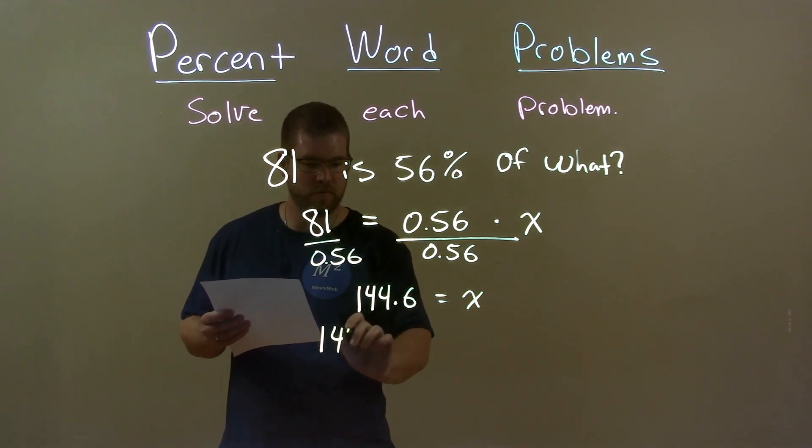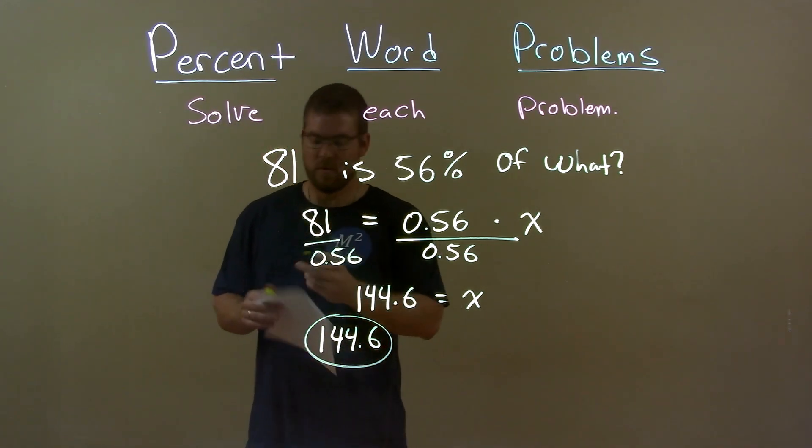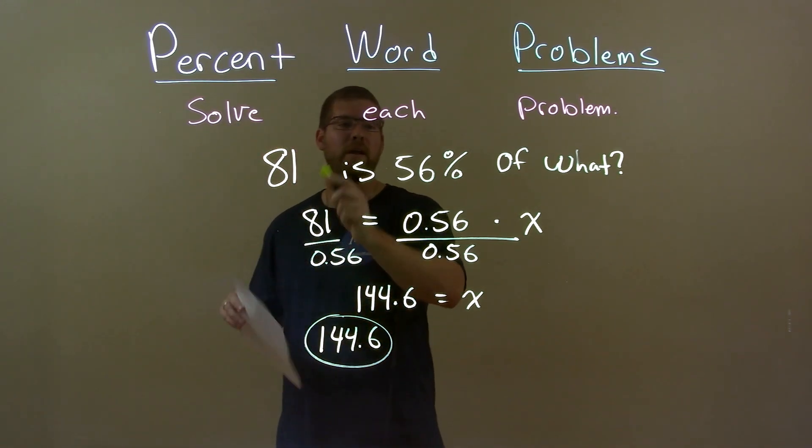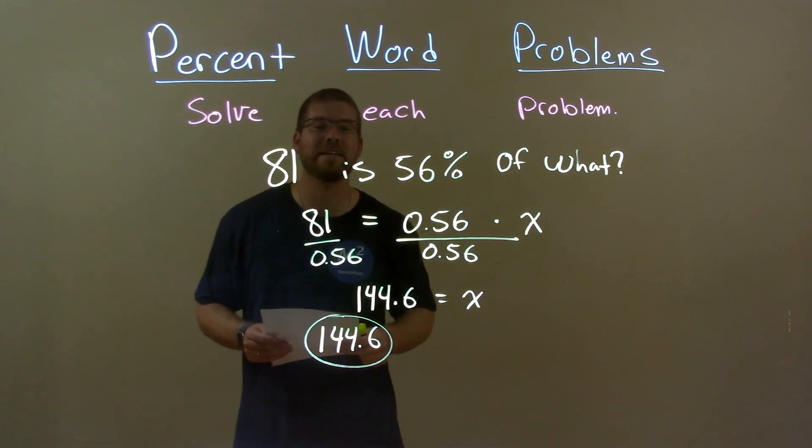So my final answer is just 144.6. So the way we write it: 81 is 56% of 144.6.